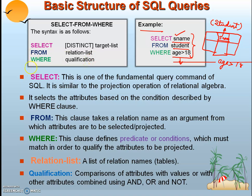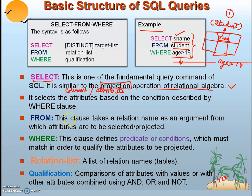In the SELECT clause, you specify the attributes you want to see in the result. It acts over columns or attributes of the table. The SELECT clause is very similar to the projection operator in relational algebra. That concept of relational algebra and its operators has been explained in one of the earlier videos.